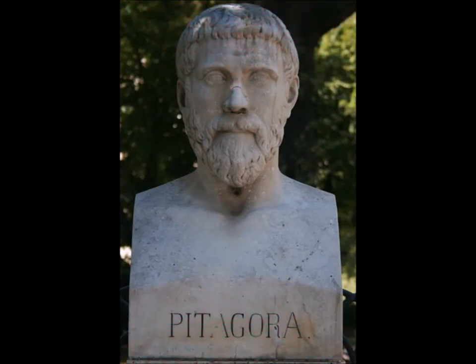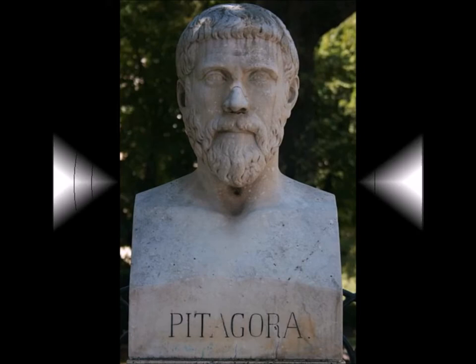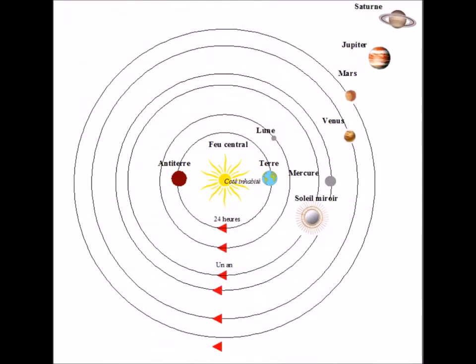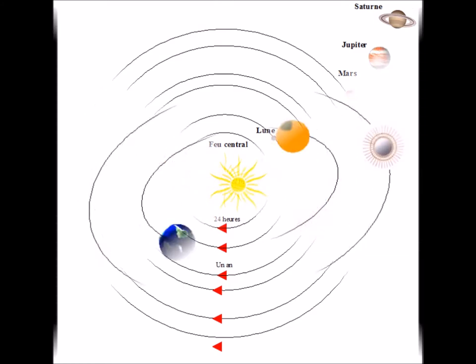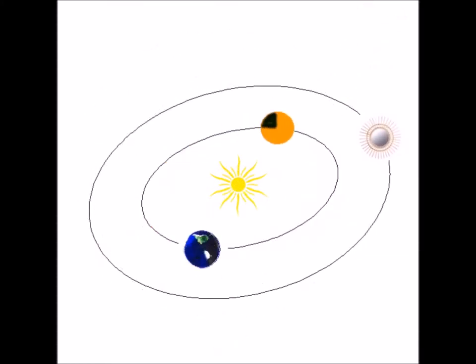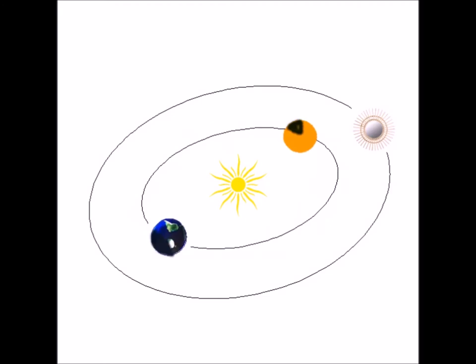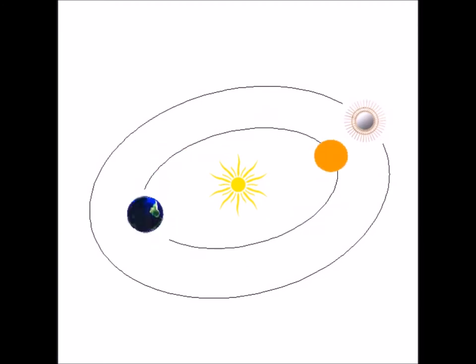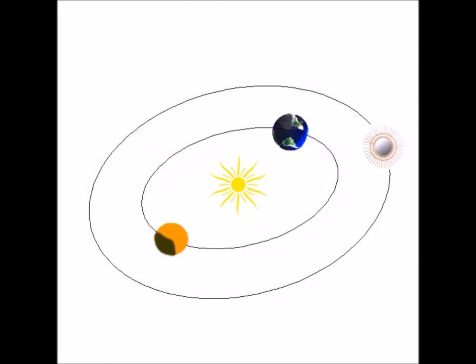The system of Pythagoras is characterized by a harmony organized according to the numbers. The central fire is the center of the world. All the celestial bodies turn around the central fire. The sun is a transparent crystal which reflects the light of the central fire.